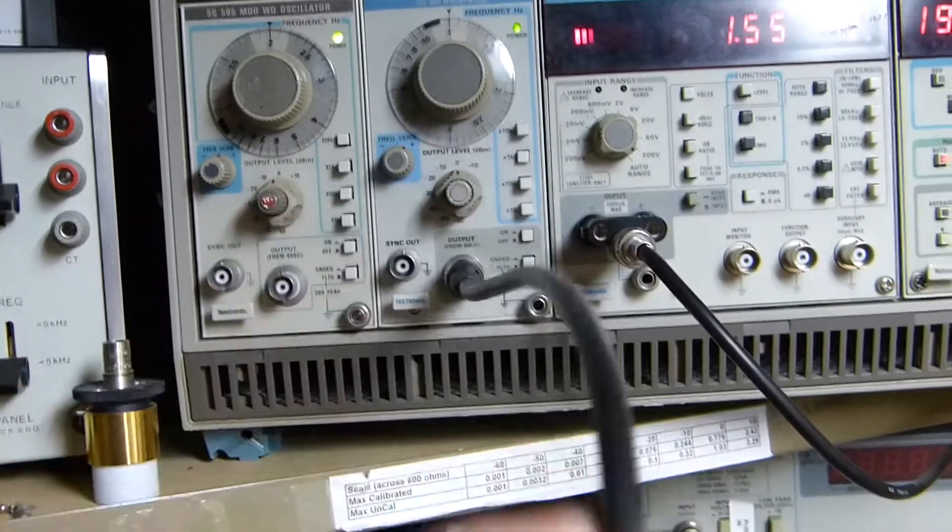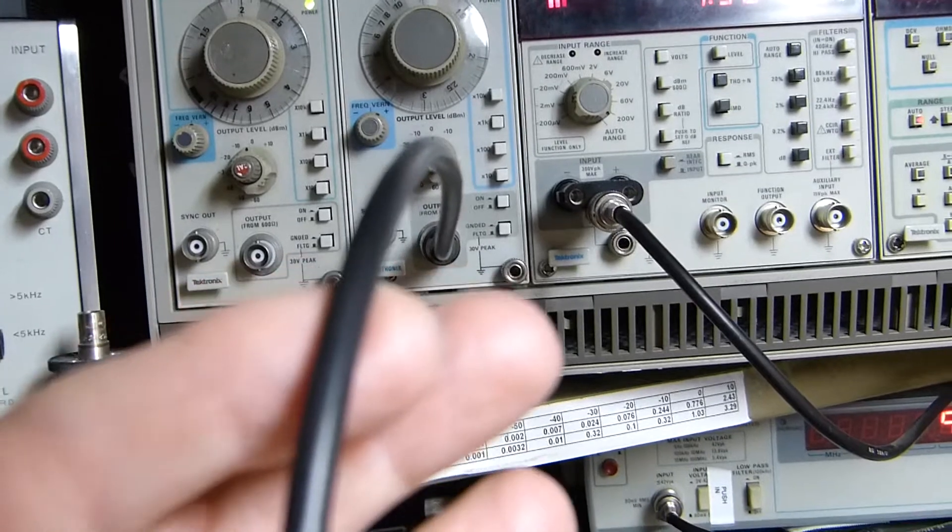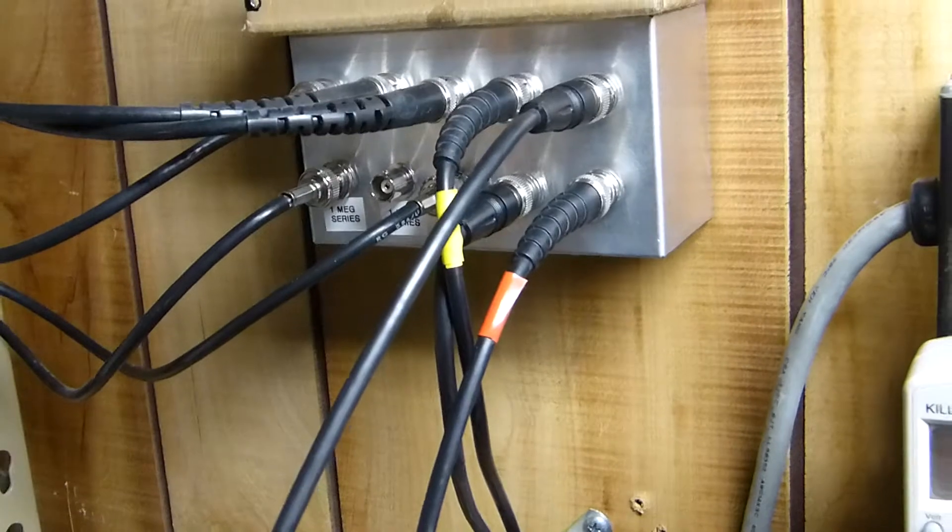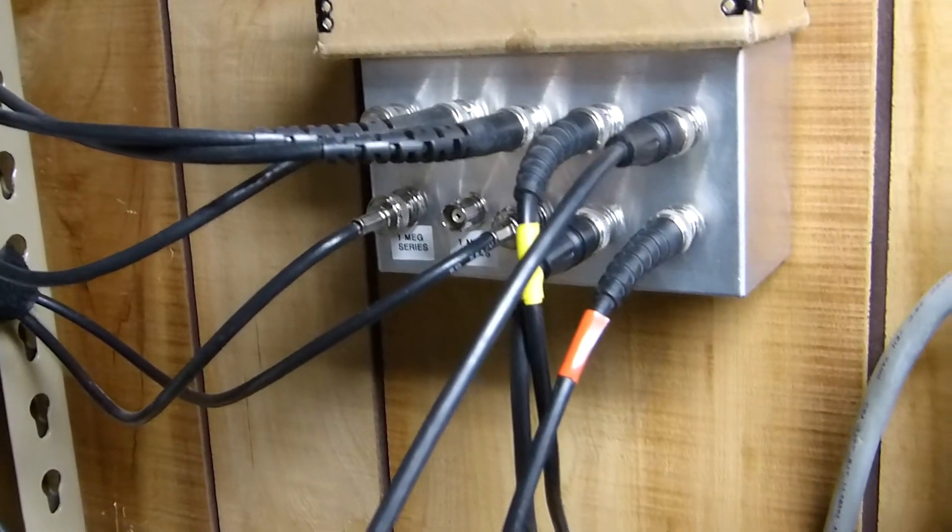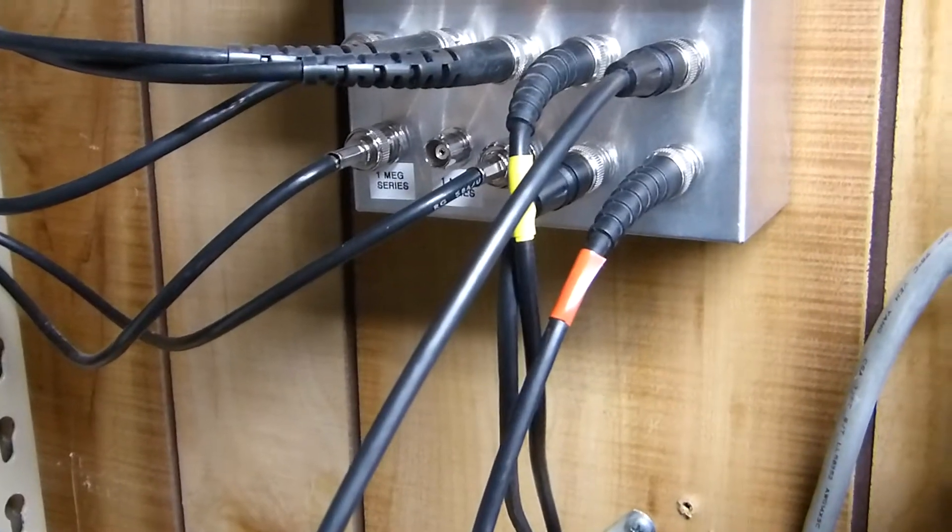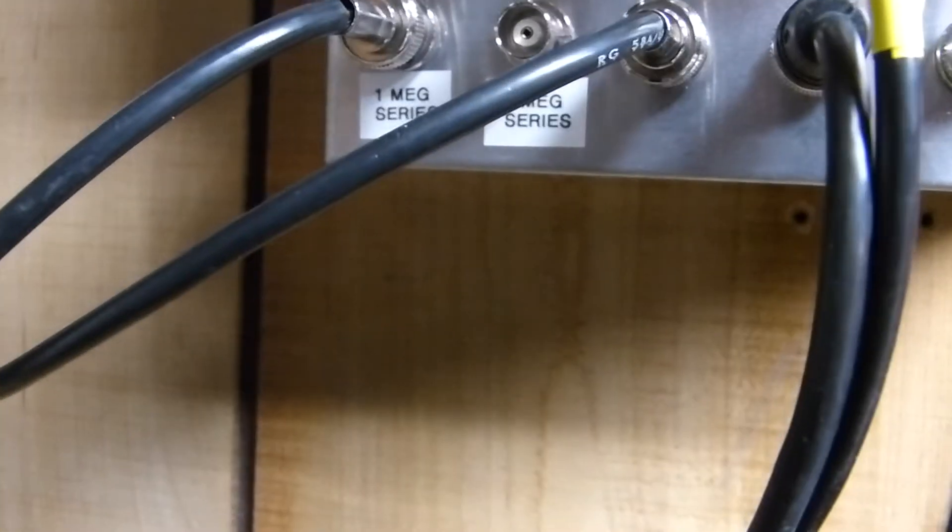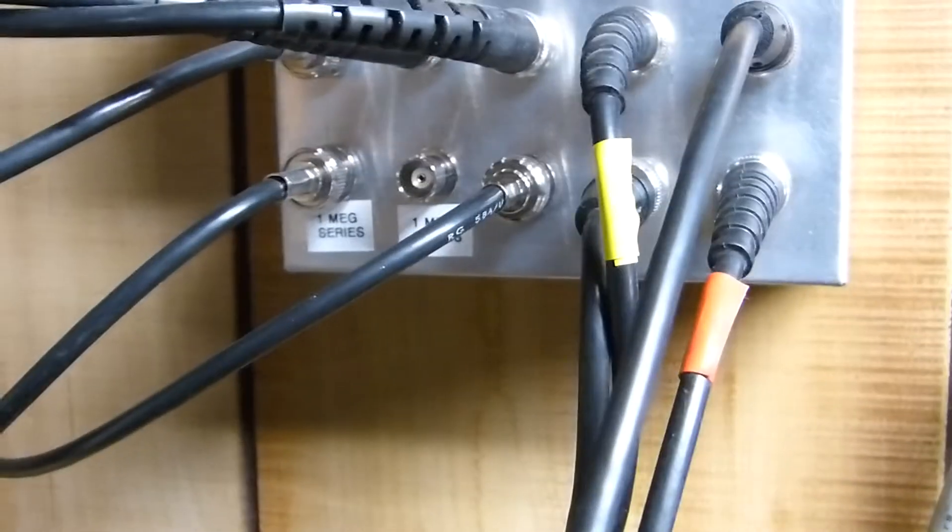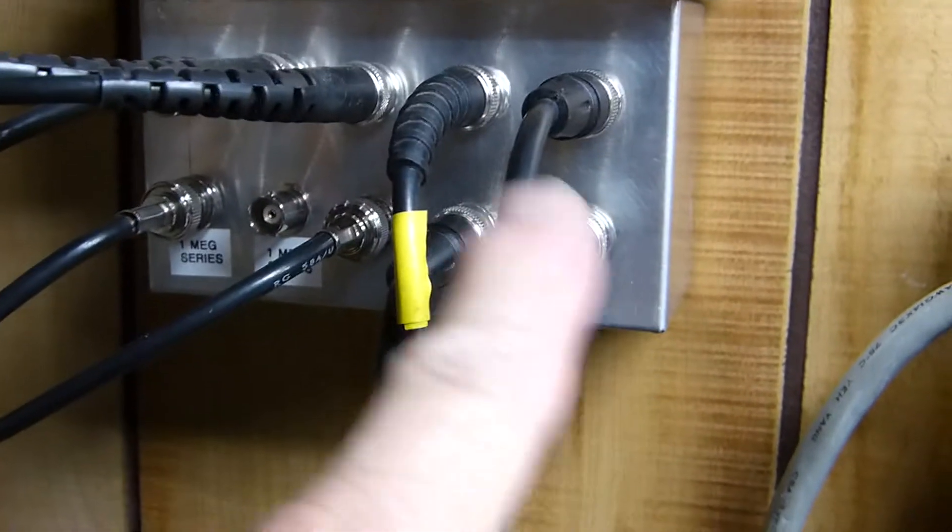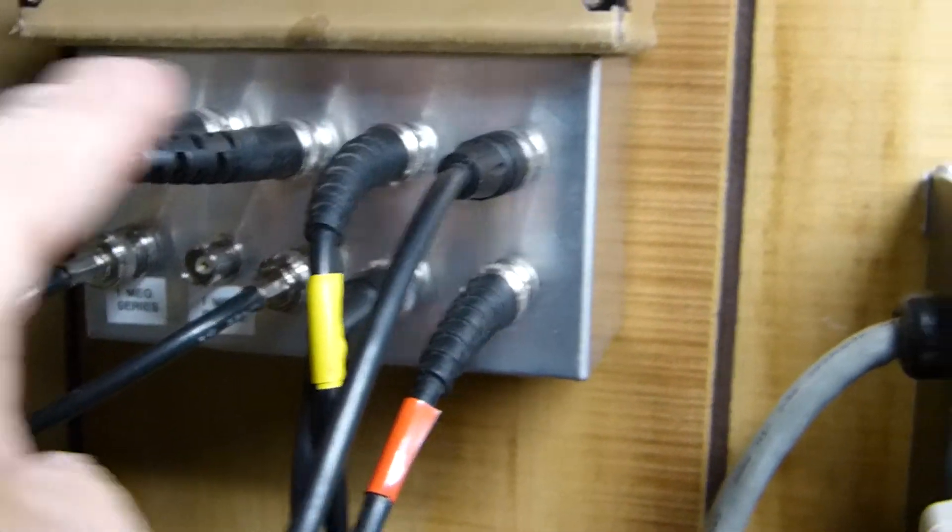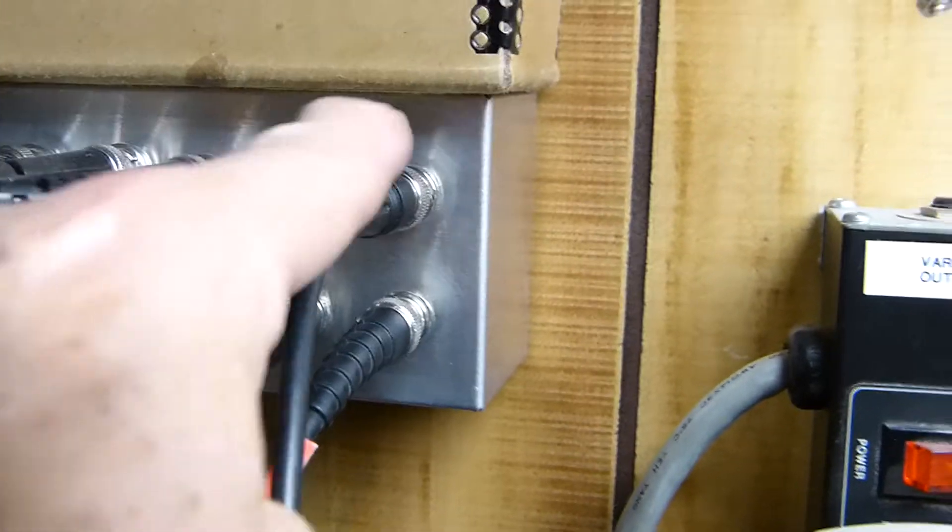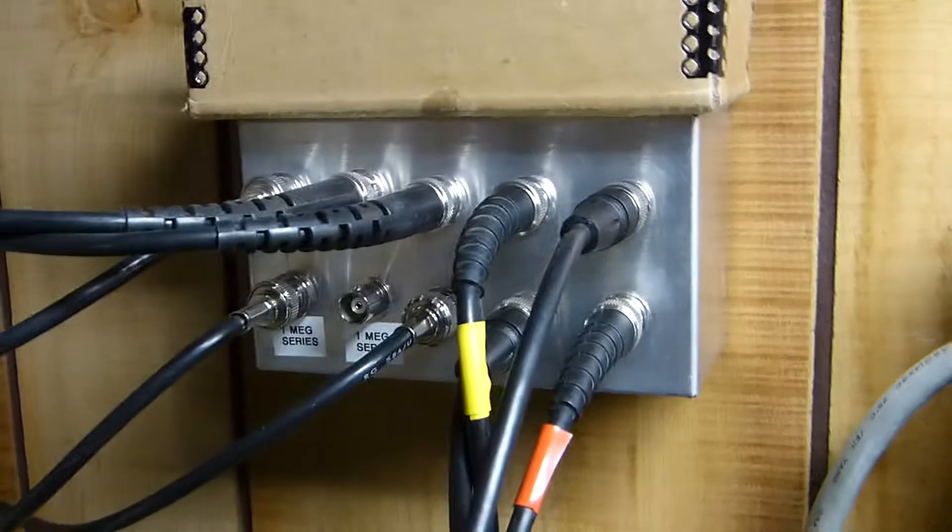There are two unique outputs on this box labeled one meg series. There's a bus connecting these five and these three together, and then these two are connected to this bus through one megaohm resistors.